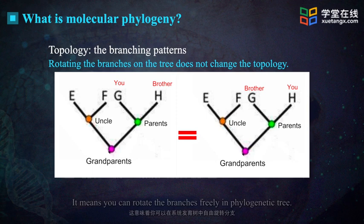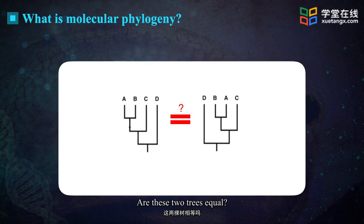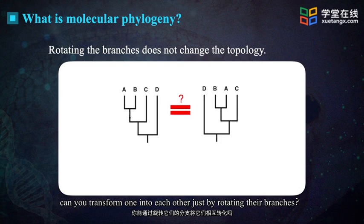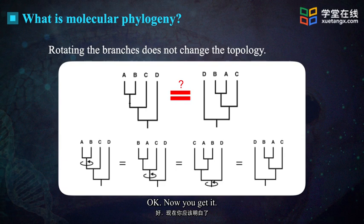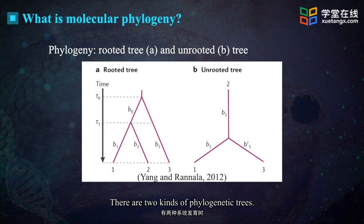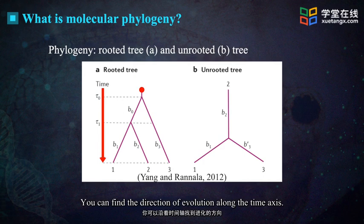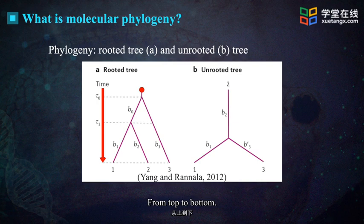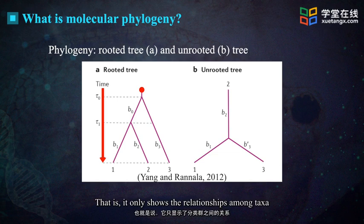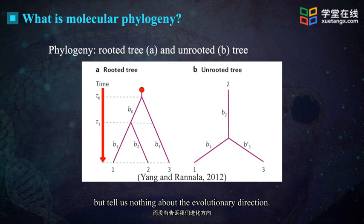Here are two phylogenetic trees. Are these two trees equal? Can you transform one into the other just by rotating their branches? The left one has a root, which is the oldest node in the tree. You can find the direction of evolution along the time axis, from top to bottom. The right one, however, is an unrooted tree — it only shows the relationships among taxa, but tells us nothing about the evolutionary direction.